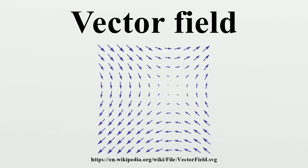Generalizations: Replacing vectors by p-vectors yields p-vector fields, taking the dual space and exterior powers yields differential k-forms, and combining these yields general tensor fields.